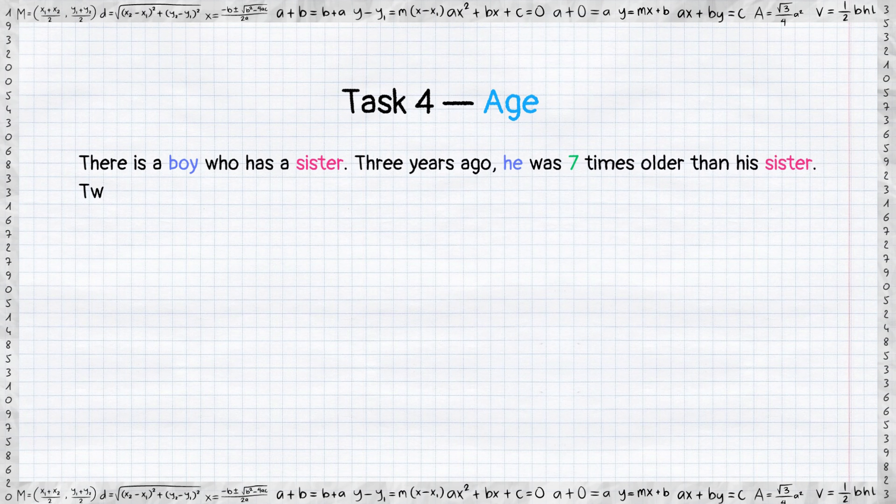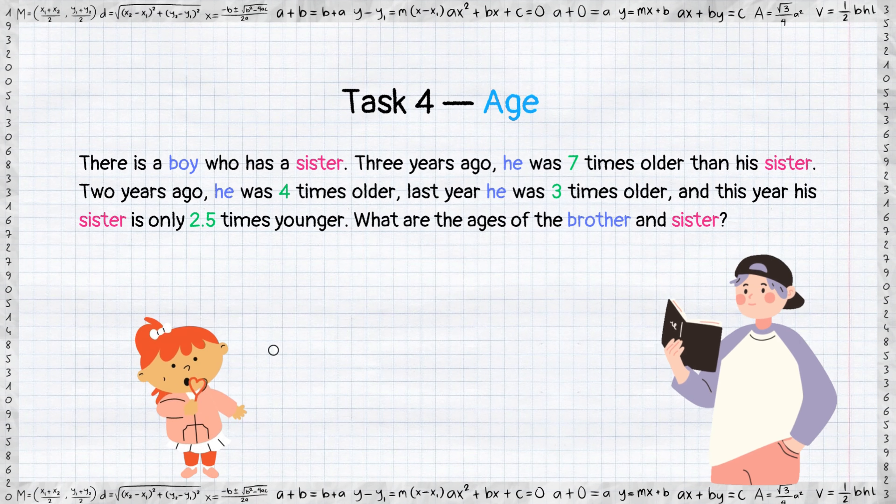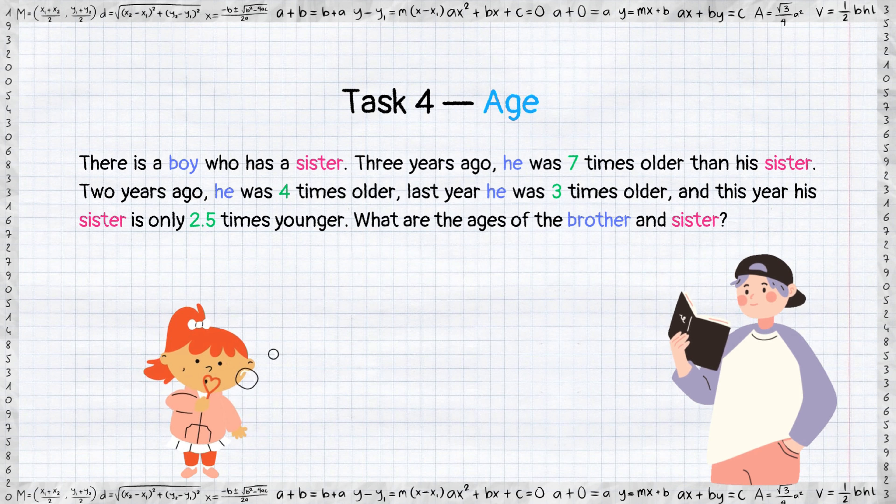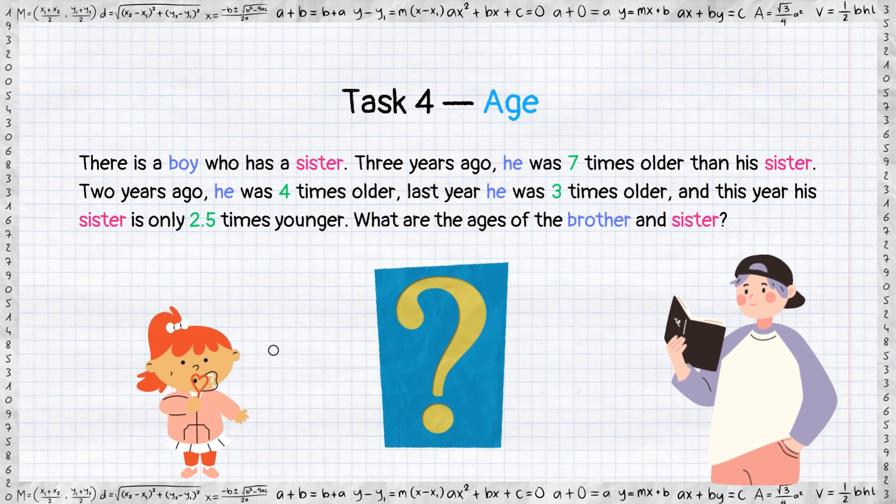There is a boy who has a sister. Three years ago he was seven times older than his sister. Two years ago he was four times older. Last year he was three times older. And this year his sister is only 2.5 times younger. What are the ages of the brother and sister?